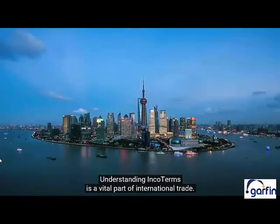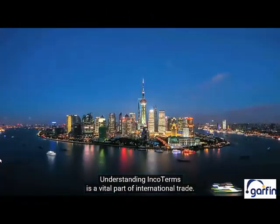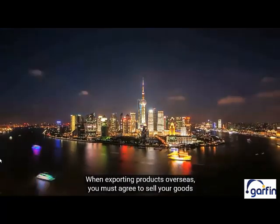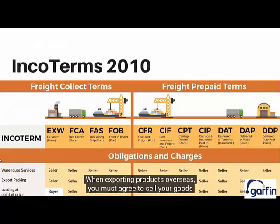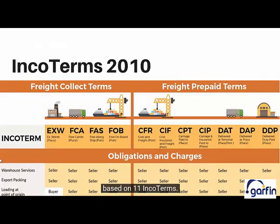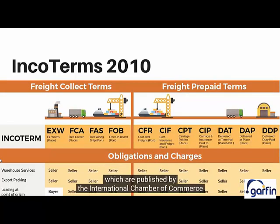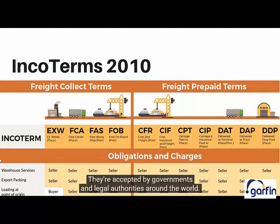Understanding Incoterms is a vital part of international trade. When exporting products overseas, you must agree to sell your goods based on 11 Incoterms. Incoterms is short for International Commercial Terms, which are published by the International Chamber of Commerce and relate to international commercial law. They are accepted by governments and legal authorities around the world.